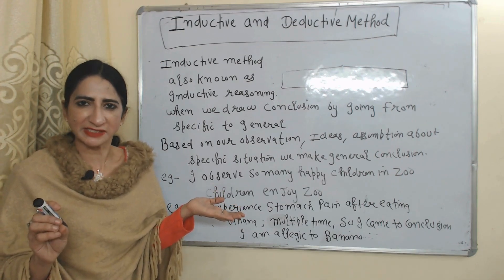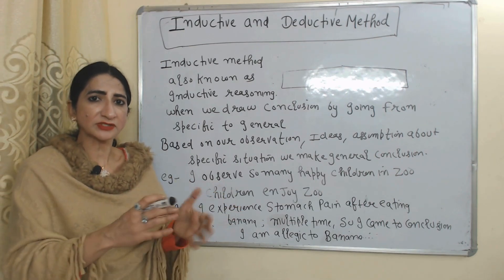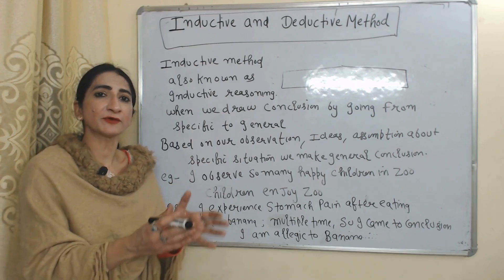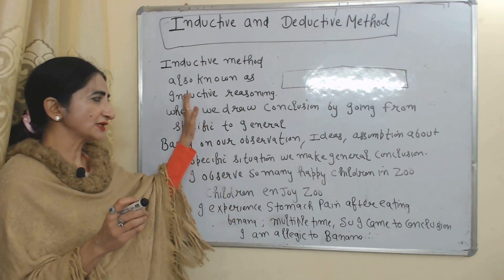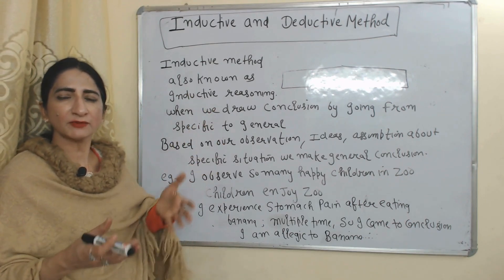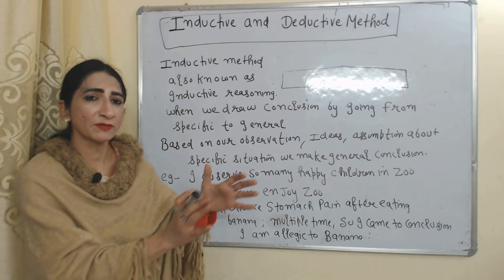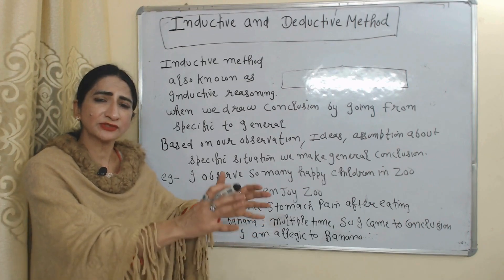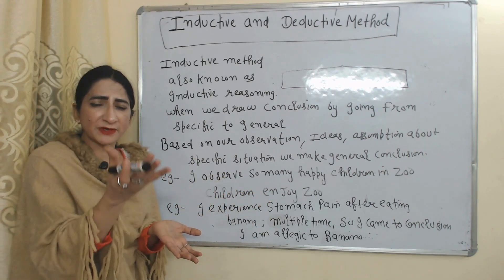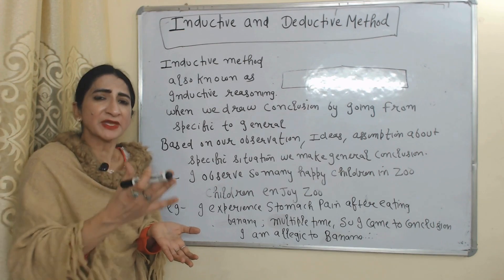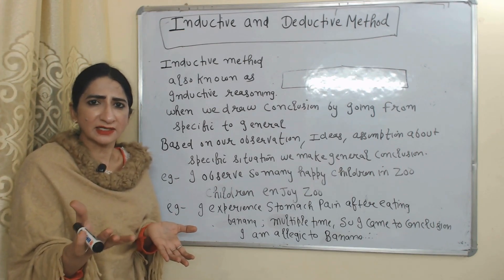In inductive reasoning, we draw conclusions by going from specific to general. In the case of the inductive method, we make conclusions by going from specific to general — that means we observe specific situations in order to make a general conclusion.